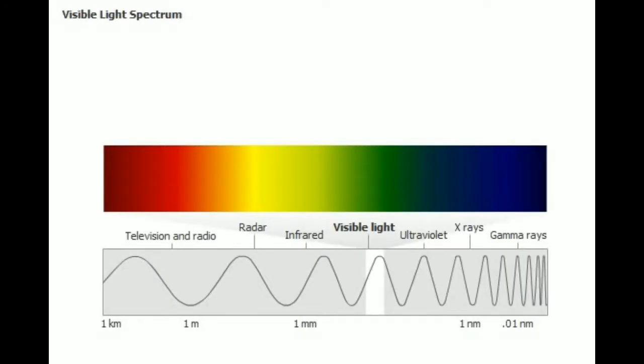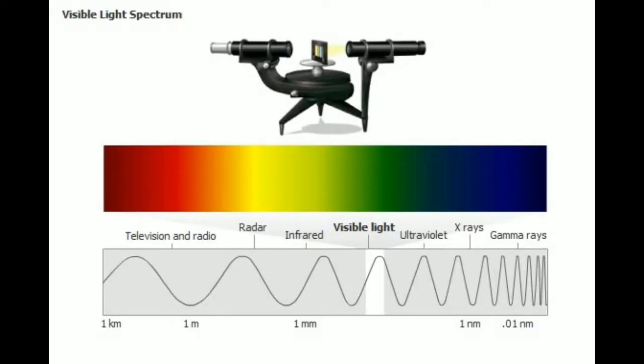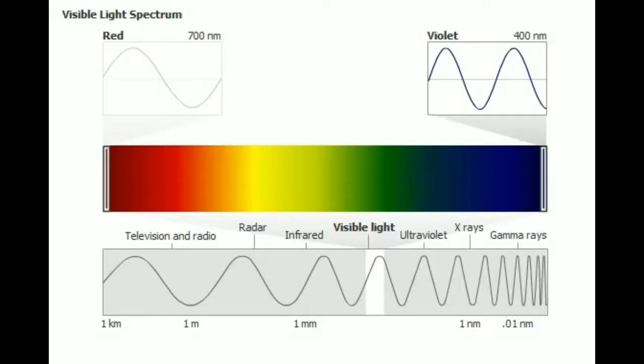Each color of visible light corresponds to a particular frequency in the spectrum. One way scientists measure this frequency is through the use of a spectrometer. Violet light has the shortest wavelength and highest frequency our eyes can detect. Red has the longest wavelength and lowest frequency we can see.